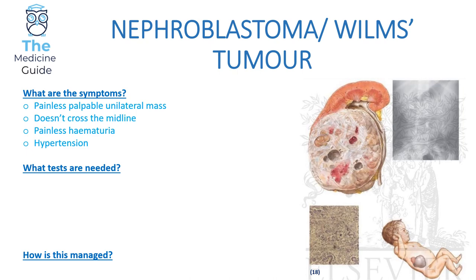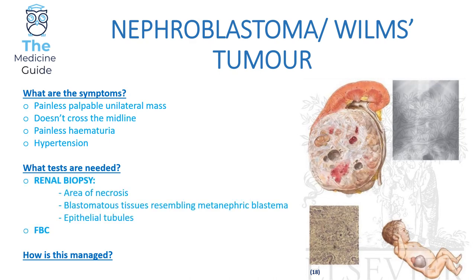In terms of tests, we need to do a renal biopsy, which will classically present as an area of necrosis or blastomic tissue resembling metanephric blastema, with epithelial tubules also present — please remember those key phrases as they'll be used in the diagnostic workup for Wilms tumour. A full blood count will show anaemia. In terms of management, we perform a nephrectomy — removing either the affected region or the entire kidney depending on how advanced the tumour is — followed by post-operative chemotherapy.